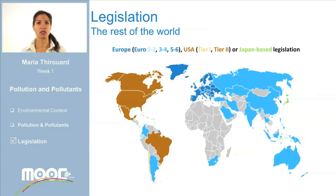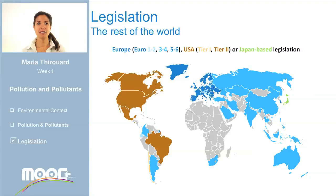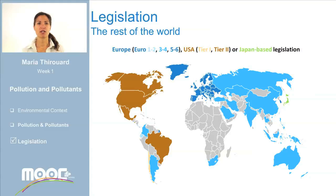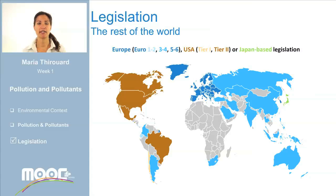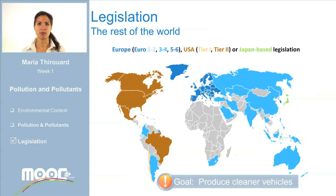The European legislation is called Euro 1 to 6, the United States legislation is called Tier 1 or 2, and there is also the Japanese legislation. At present, each country follows one of those three regulations. You can see the countries following the European legislation in different shades of blue. The countries following the US legislation are in different shades of brown. The Japan-based legislation is currently followed by Japan and is represented in green. Not all the countries are at the same limits, but the goal is the same: to force the transport sector to produce cleaner vehicles.